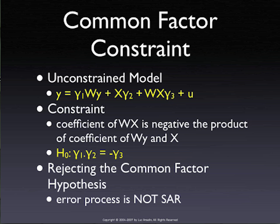You may see this referred to in the literature as a test on common factors; time series have a counterpart with the same rationale — you look at whether the constraints implied by the model are actually satisfied by your data. There are two important things to remember from this common factor model. First, if there is spatial autocorrelation in the error terms, use caution in incorporating a spatially lagged explanatory variable WX in the model because you have identification problems. Second, if you reject the common factor hypothesis, then your error model is not a SAR model — it's something else. As a result, if you estimate it as a SAR model, there's a specification error and you might actually be making things worse than they were to begin with.